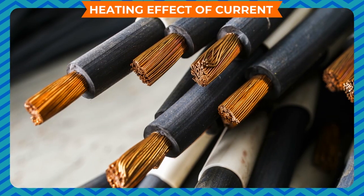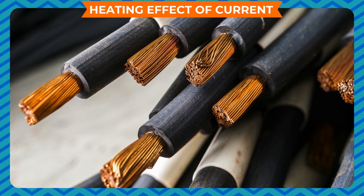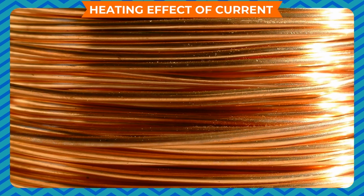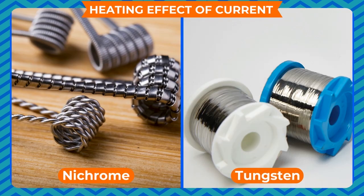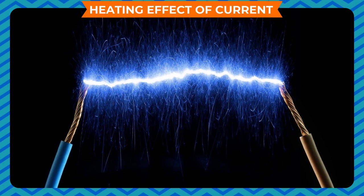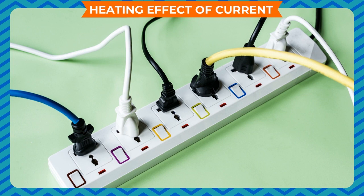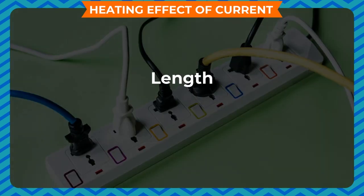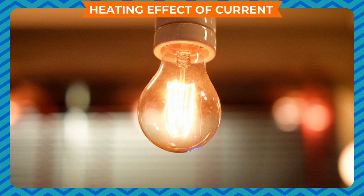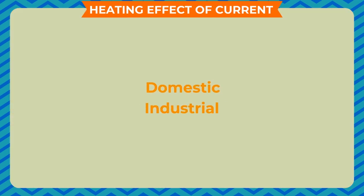Copper wires offer very less resistance, thus they do not get heated up quickly. This is because they are used as conductive wire. Nichrome and tungsten offer high resistance to the flow of electric current and get heated up. Besides the material, the amount of heat generated in the wire also depends on the length and thickness of the wire. The heating effect of electric current is used in a large number of domestic and industrial appliances.